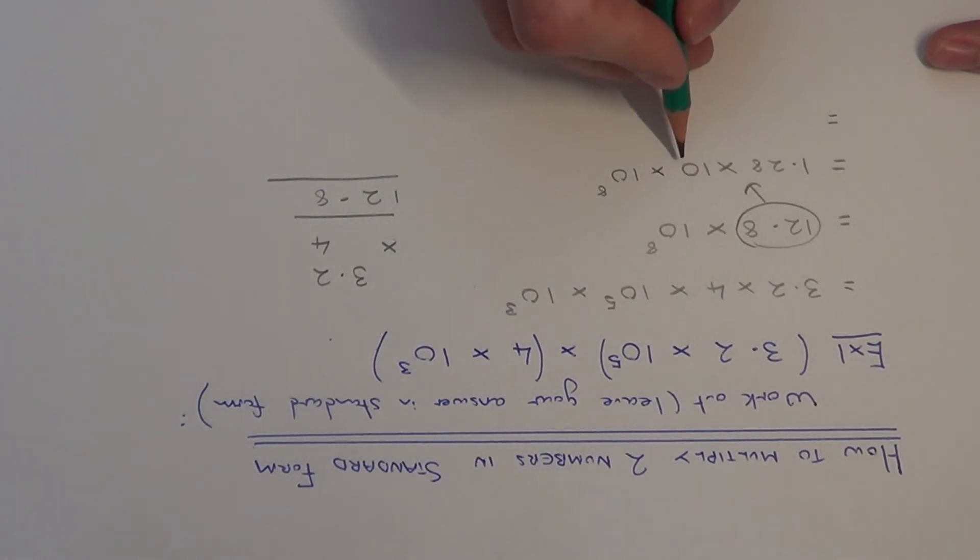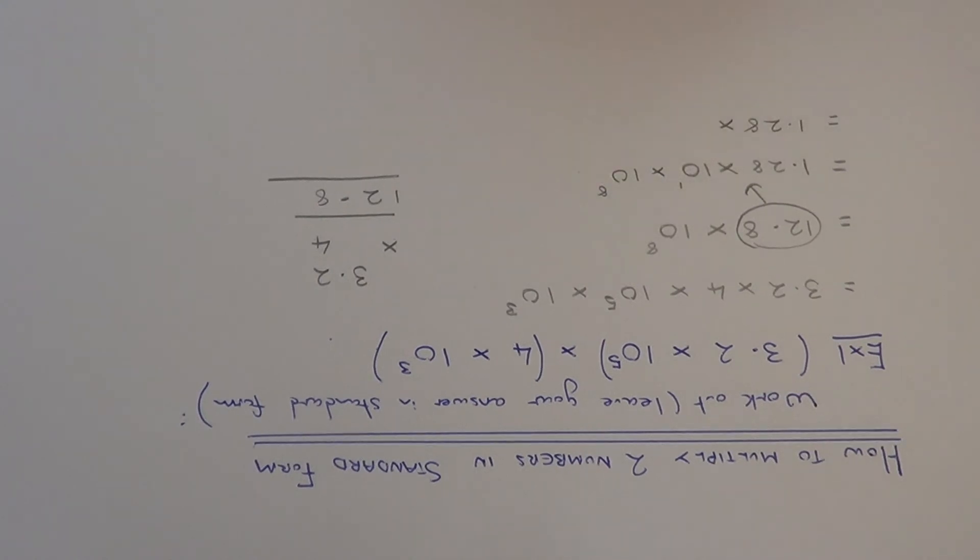And again we can multiply this bit here together so we can tidy it up. So we've got 10 to the power of 1 times 10 to the power of 8. Again you're multiplying the powers so you just need to add the two powers at the top. Which gives 10 to the power of 9.